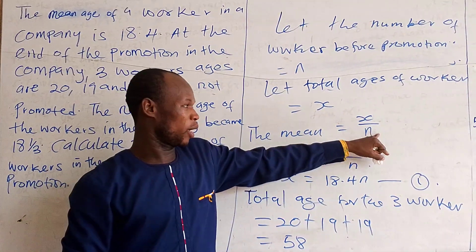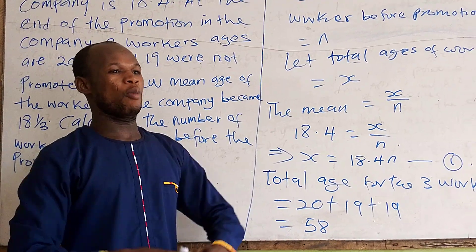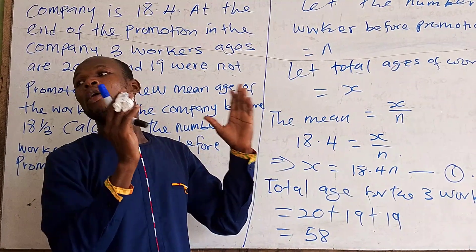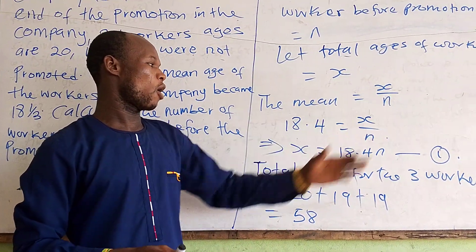The mean has been given to us as x over n, because any time we talk about mean or average, we divide the total ages by the total number of workers.